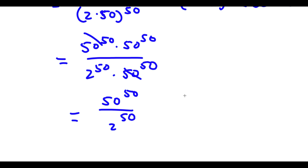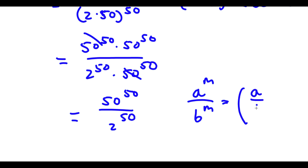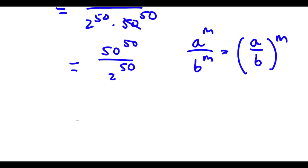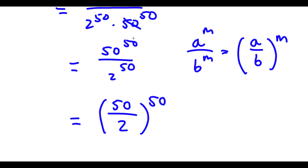Now if I have something in the form a to the power of m over b to the power of m, this is equal to a over b to the power of m. So in this case, I have 50 to the power of 50 over 2 to the power of 50, so this is going to equal 50 over 2 to the power of 50. We are essentially factoring out our exponent here from our two terms, because both terms have the same exponent — just like if two terms had the same coefficient, we would factor out that coefficient. So now 50 divided by 2 is equal to 25.